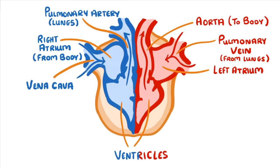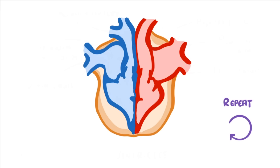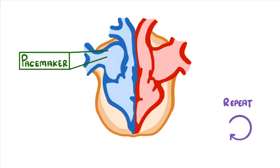At the same time the atria will refill with new blood and the whole cycle will repeat. In fact this cycle repeats around 70 times a minute, which is over 100,000 times each day. To keep this beat steady we have a group of cells in the right atrium that act as a pacemaker, and these pacemaker cells produce small electrical impulses which spread through the muscular walls of the heart causing them to contract.